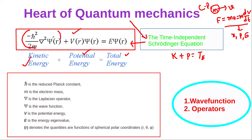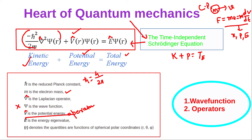In the Schrödinger equation, ħ is the reduced Planck's constant, equal to h/2π; m is the mass of the electron; and ∇ (del) is the Laplacian operator. In quantum mechanics, every operator comes with a cap (hat). There are two operators present in this equation. ψ is the wave function — no cap on ψ — while V̂ is the potential energy operator and Ê is the energy eigenvalue operator.